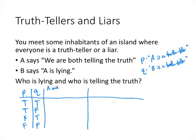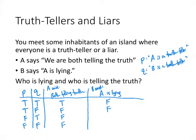A said 'they're both telling the truth.' That statement is also either true or false. In the first scenario where P and Q are both true, A and B are both truth-tellers, so the statement is true. In all other scenarios they're not both truth-tellers, so A's statement is false. B says 'A is lying.' In the first two scenarios A is not lying, so B's statement is false. In the third and fourth scenarios A is in fact a liar, so B's statement is true.